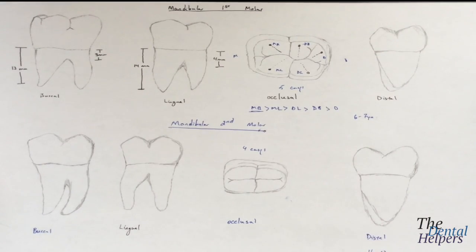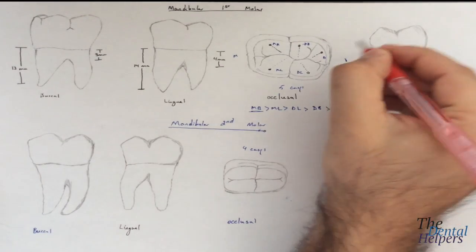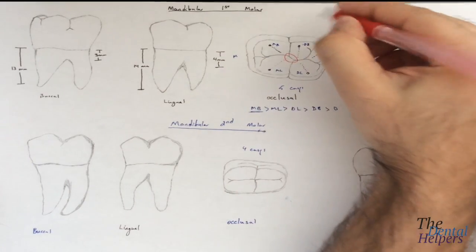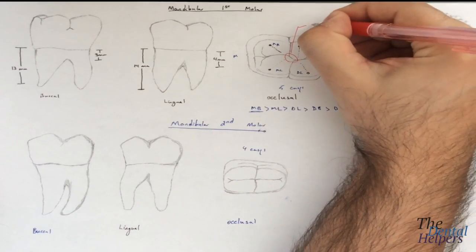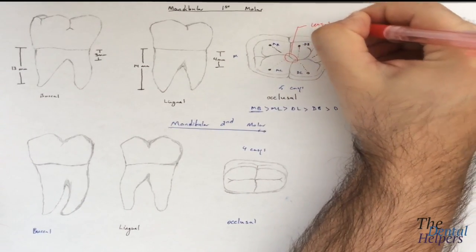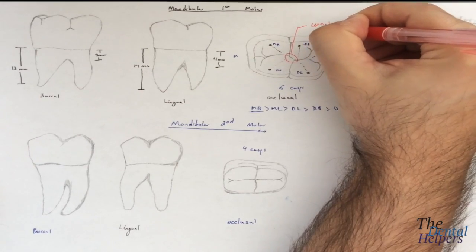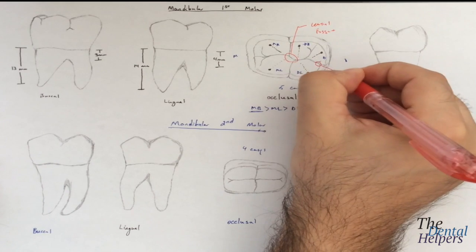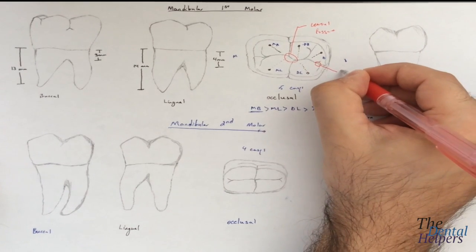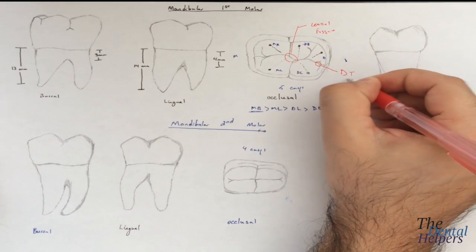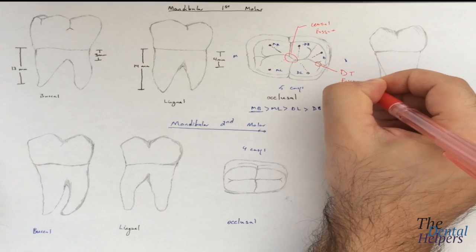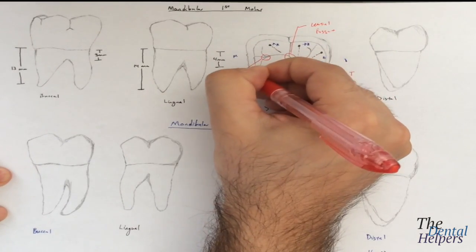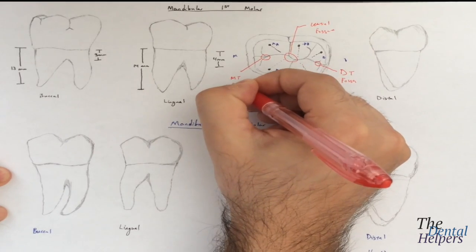Now if we're looking at the different parts, dead in the center right here is where the central fossa is. In this spot right here is the distal triangular fossa. And then you probably guessed that this side right here is the mesial triangular fossa.